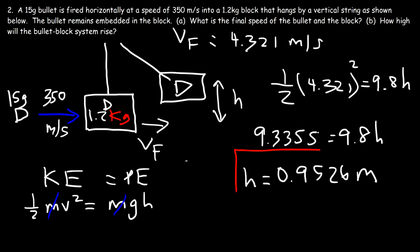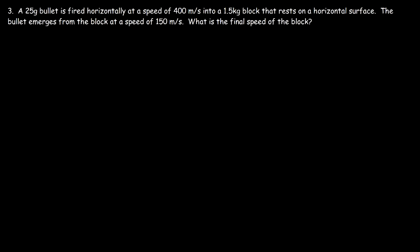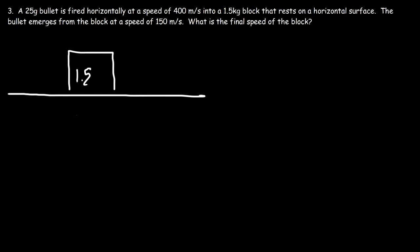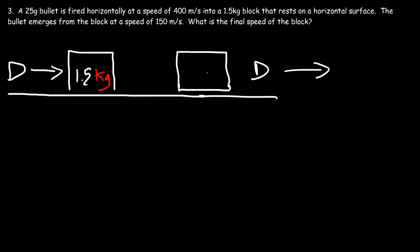So that's how high the bullet-block system will rise above its initial level. Now let's work on the last problem. A 25 gram bullet is fired horizontally at 400 meters per second into a 1.5 kilogram block resting on a horizontal surface. The bullet emerges from the block at 150 meters per second. Some momentum from the bullet is transferred to the block, causing it to move. Our goal is to calculate the final speed of the block.